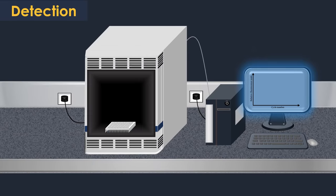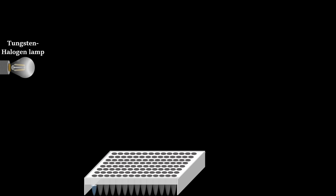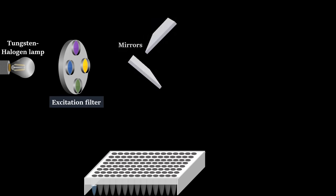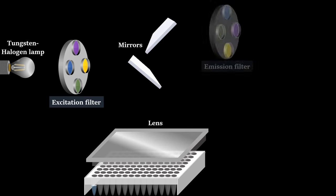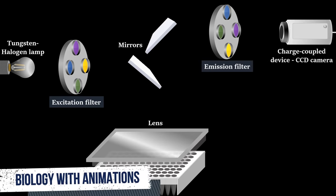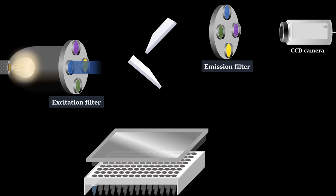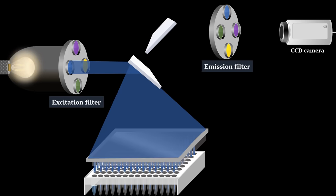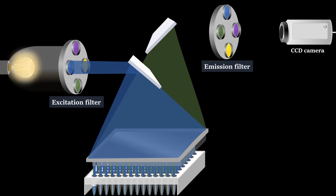For the measurement of the fluorescence signal, a tungsten halogen lamp, an excitation filter, mirrors, lens, an emission filter, and a charge-coupled device CCD camera are used. Filtered light from the lamp is reflected off mirror, passes through a condensing lens, and is focused into the center of each well. Then fluorescent light emitted from the wells reflects off the mirror, passes through an emission filter, and is detected by the CCD camera.